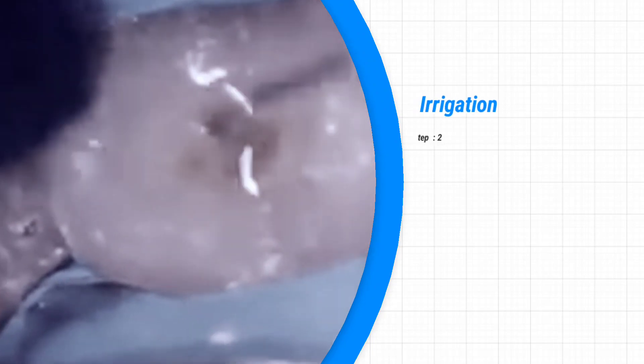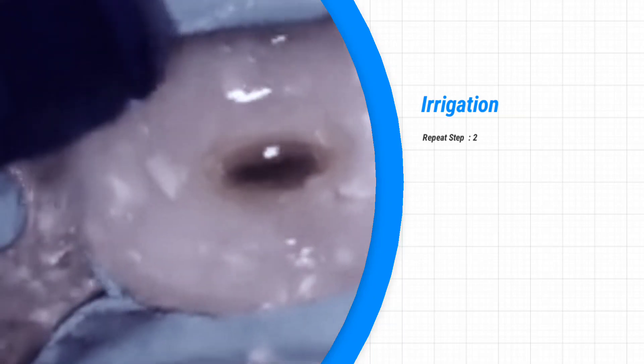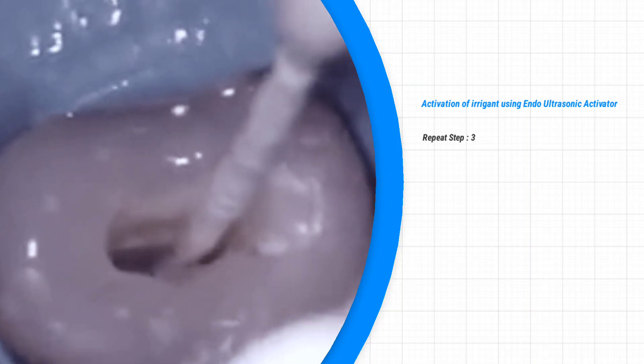Continue repeating the cycle: prepare the canal with a file, irrigate with sodium hypochloride using a side vent syringe, then agitate with the ultrasonic endo activator using short vertical strokes for around 30 seconds.